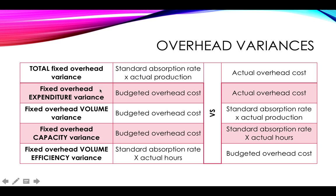You can then look at your fixed overhead expenditure variance. This is the most straightforward: simply take your total budgeted overhead cost and compare it to the actual overhead cost incurred. It is literally just taking the two monetary figures and comparing them.